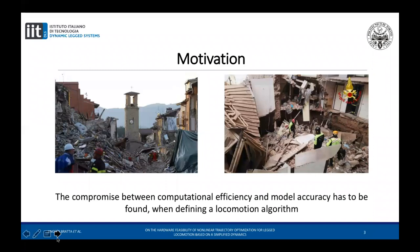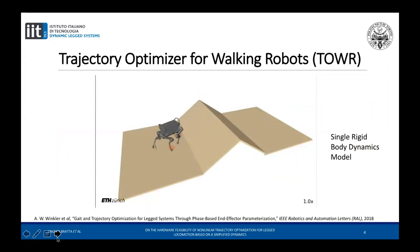Quadruped robots can have several different applications and according to that, when defining a locomotion algorithm, we need to clearly establish our goal. Accuracy and robustness require a complex model which can't be suitable for scenarios in which big computational efficiency is needed. On the contrary, the lack of knowledge typical of simplified models can lead to locomotion that is infeasible in the presence of complex environments like the one in the slide. Keeping this in mind, we developed a new approach for trajectory optimization, implementing it on our hydraulically actuated quadruped robot HyQ.